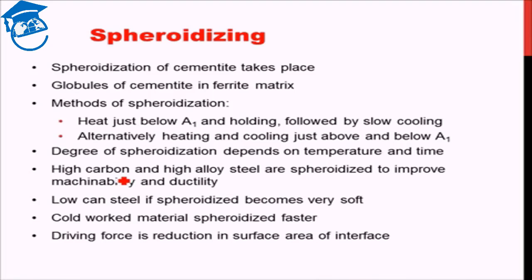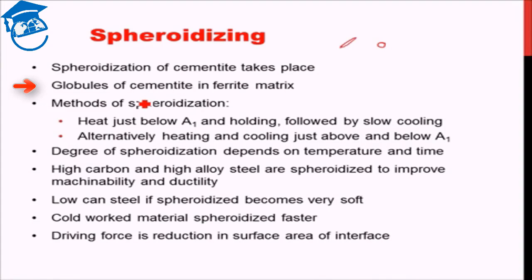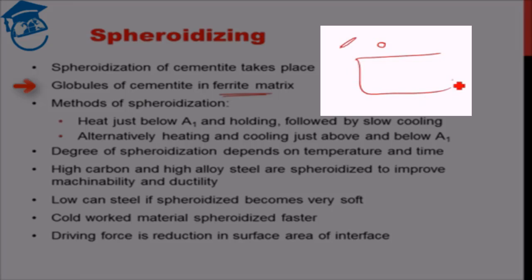That will improve the toughness of the material. The idea is basically that instead of long elongated cementite particles, we get spheroidized cementite particles. As a result of spheroidization, globules or spheres of cementite are dispersed throughout the ferrite matrix — we have a matrix of ferrite with fine spherical particles of cementite dispersed throughout.